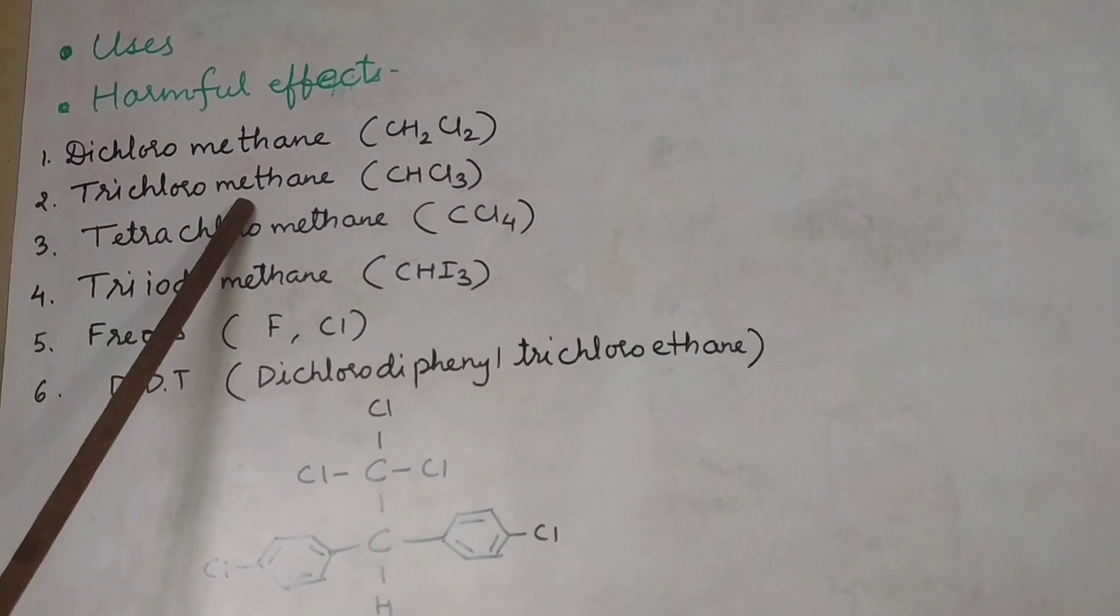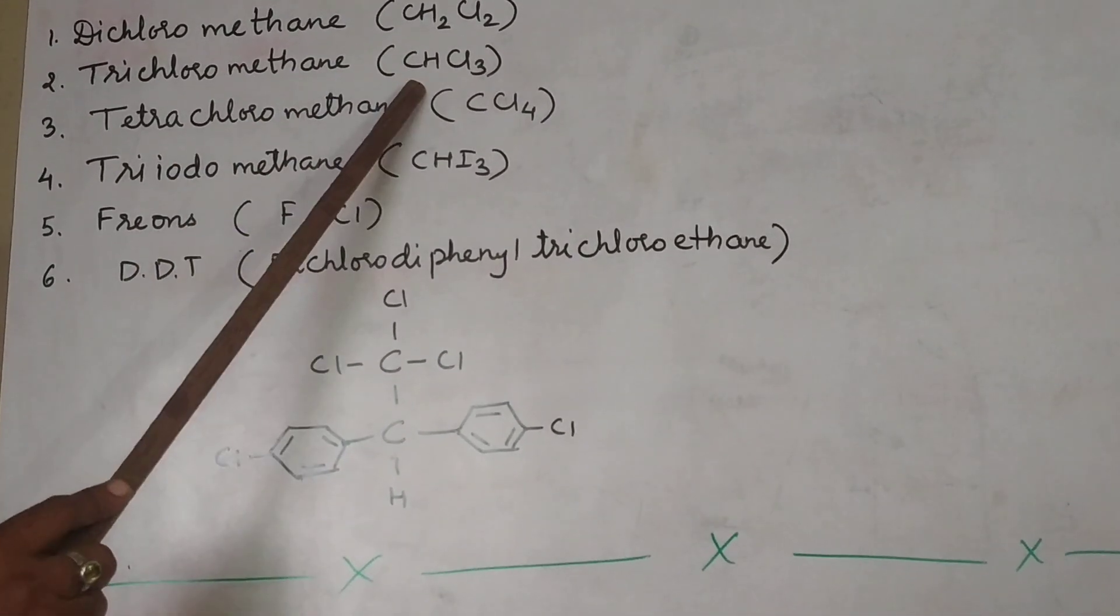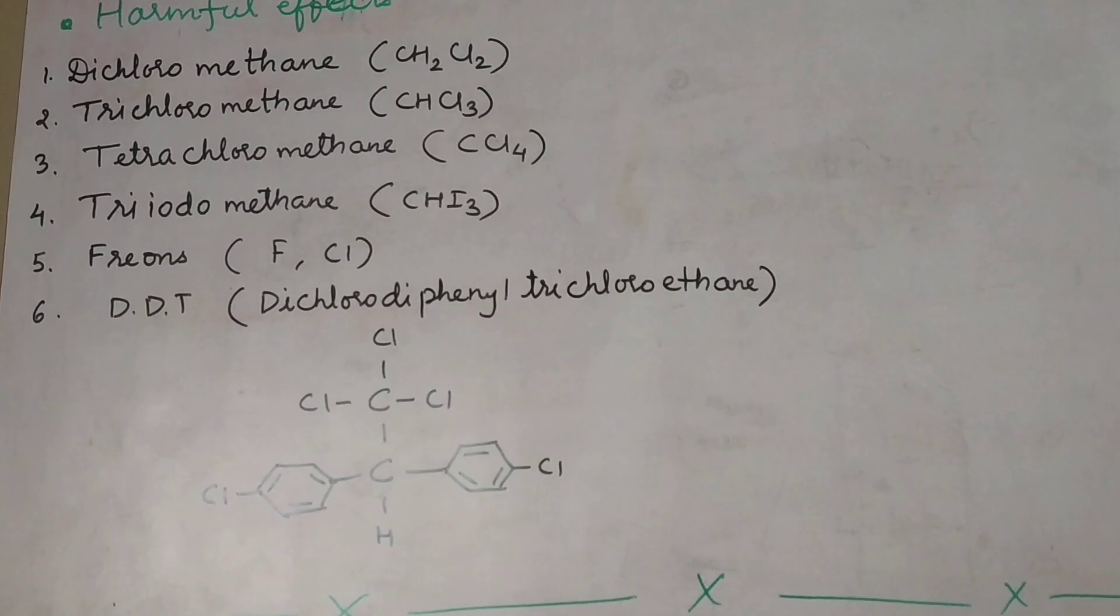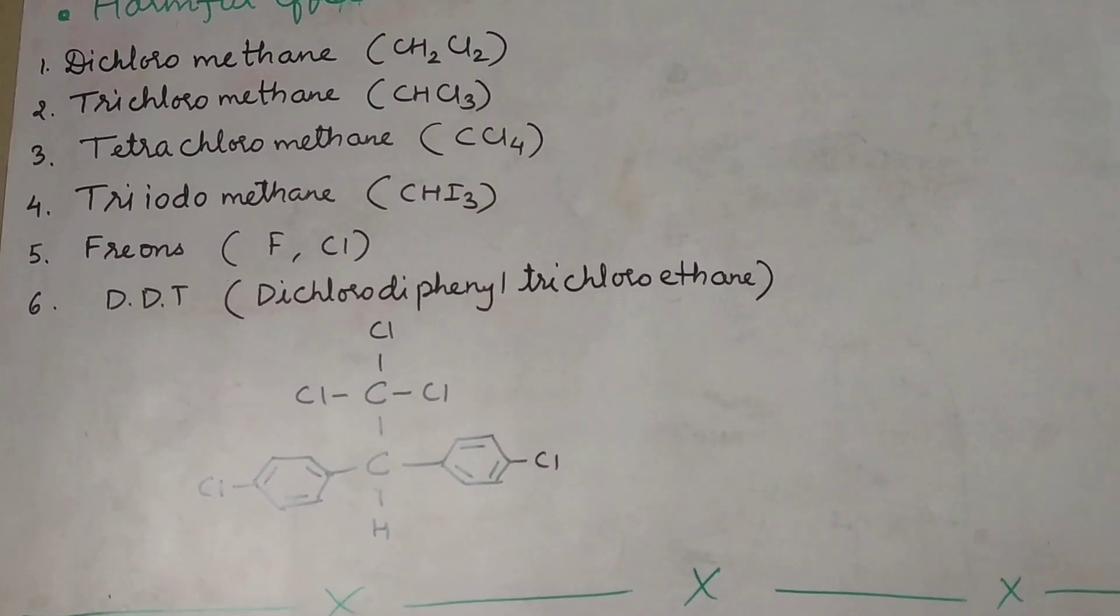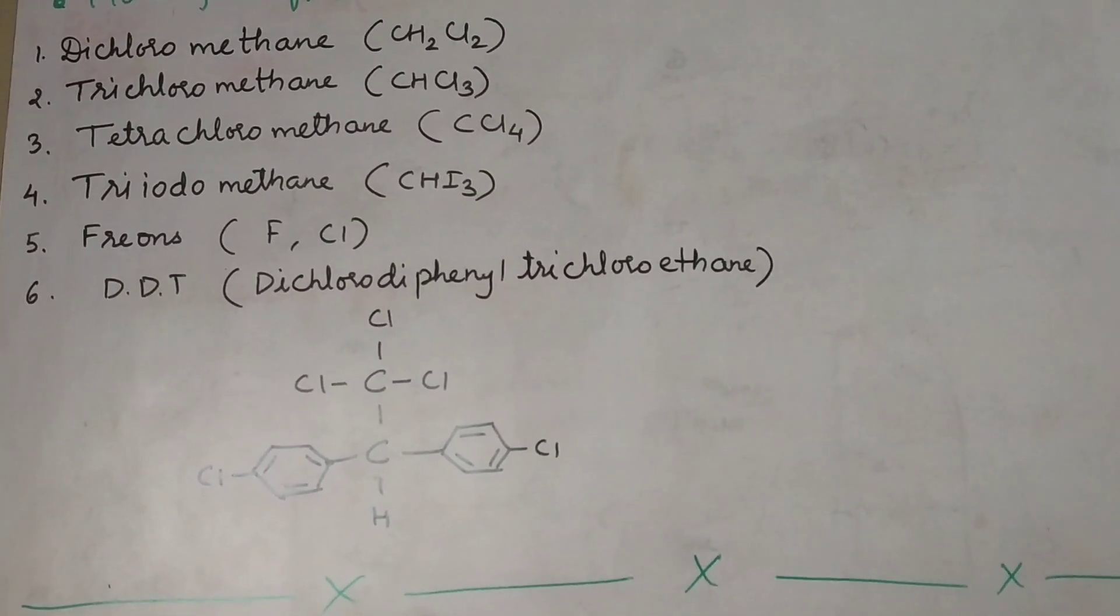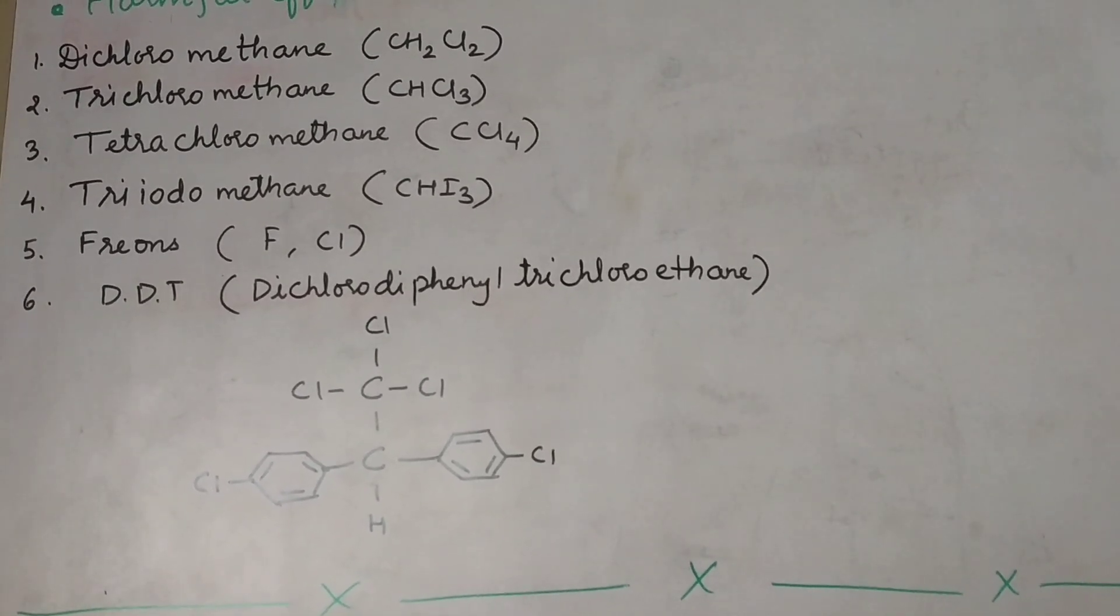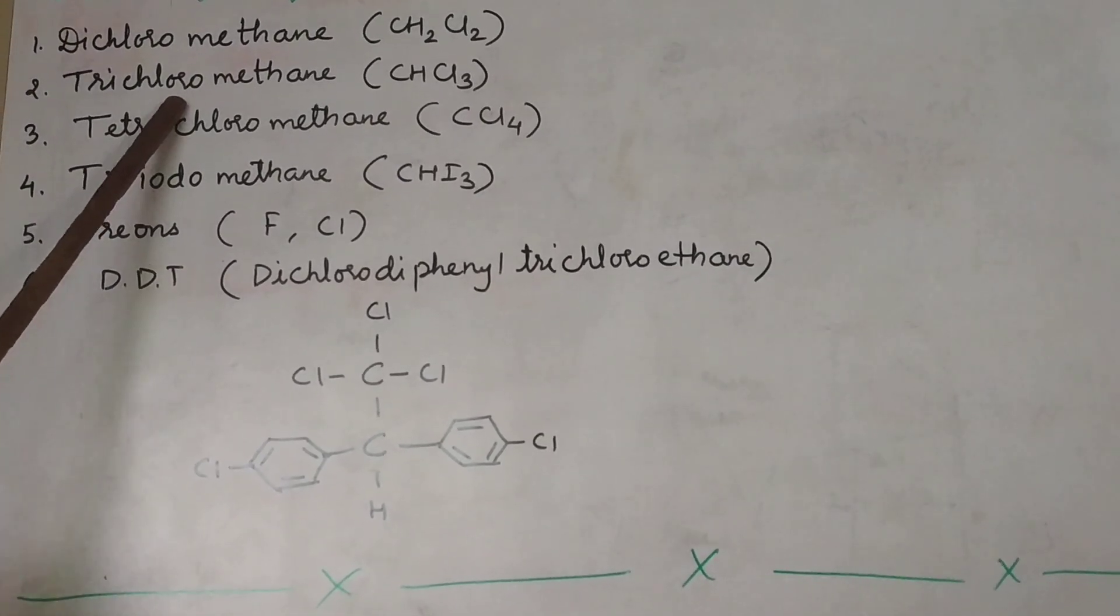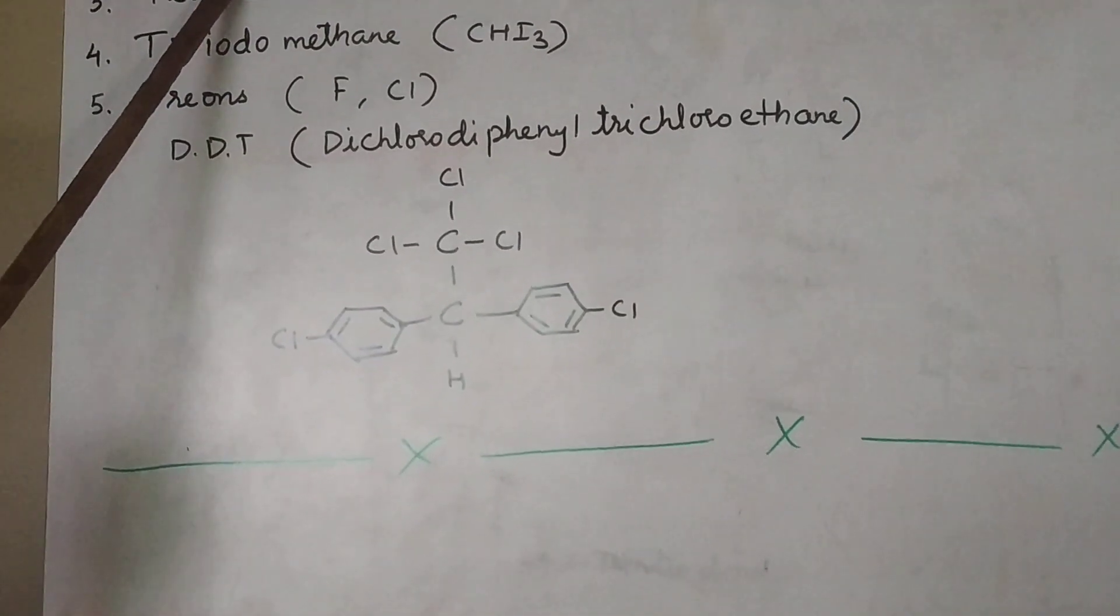Second compound is trichloromethane formula CHCl3 also called as chloroform. It has the uses as it is used as solvent. It has many harmful effects. Like it can cause depression in the central nervous system that is depression in the brain. It can cause dizziness, headache and when this reacts with air and moisture, trichloromethane, it can form a very poisonous compound in the body that is called as phosgene.